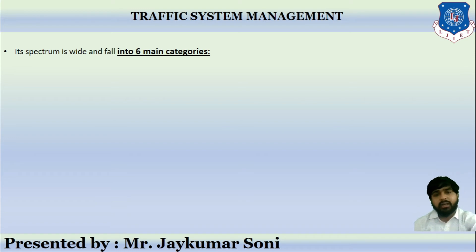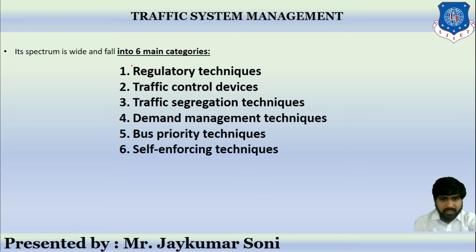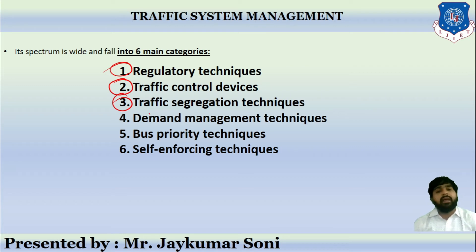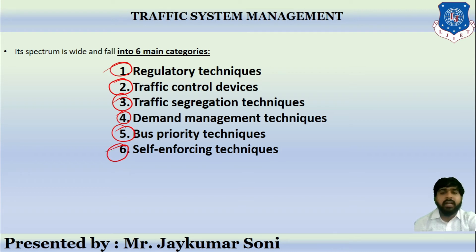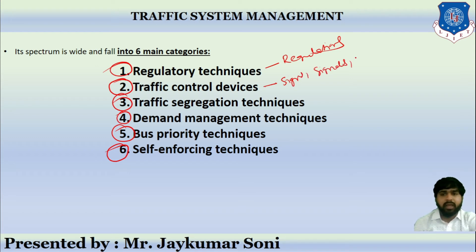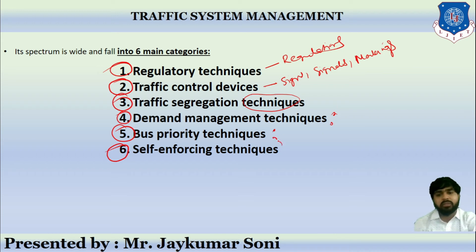Traffic system management falls into six main categories. First is regulatory techniques. Second is traffic control devices. Third is traffic segregation techniques. Fourth is demand management techniques. Fifth is bus priority techniques. And last is self-enforcing techniques. Regulatory techniques deal with various kinds of regulations. Traffic control devices deal with the placing and setting up of signs, signals, and various kinds of markings. Traffic segregation techniques are used to segregate traffic.